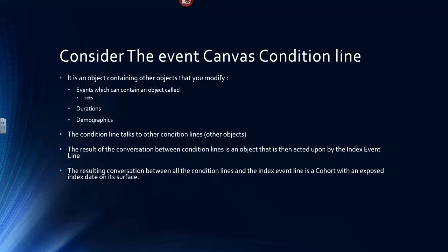And the resulting conversation between the Condition Lines and the Index Event Line is a cohort with an exposed Index State on its surface. The cohort is an object with cohort members represented by the MRN, their Index State, and the properties belonging to their defining Index Event.